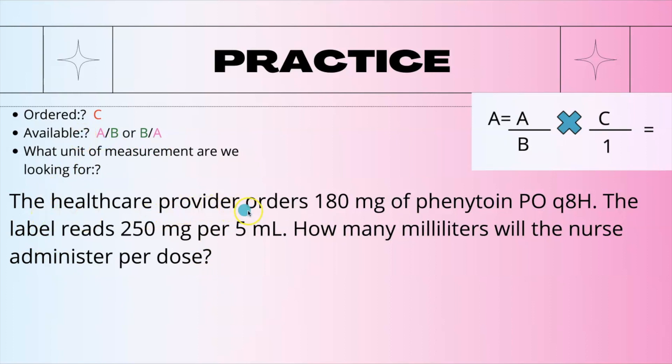The healthcare provider orders 180 milligrams of phenytoin PO q8H. The label reads 250 milligrams per 5 mL. How many milliliters will the nurse administer per dose? What's ordered? 180 milligrams. That's our C which goes here.